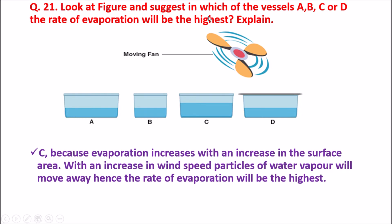Question 21: Look at the figure and suggest in which of the vessels A, B, C, D the rate of evaporation will be the highest. There are 4 vessels with liquid, one has a moving fan, one is small, one is covered, one is wide. The correct answer is C, because evaporation increases with an increase in surface area, and vessel C has the highest surface area.